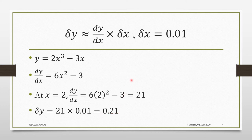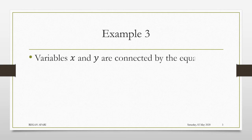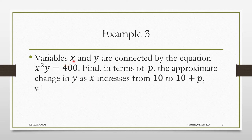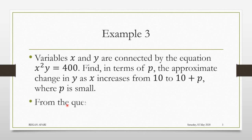What this means is that as x changes by 0.01, y will change by 0.21. Let's take another example. Variables x and y are connected by the equation x²y = 400. Find, in terms of p, the approximate change in y as x increases from 10 to 10 + p, where p is small. This part is really important — p is supposed to be small because we are talking about small change in approximation.